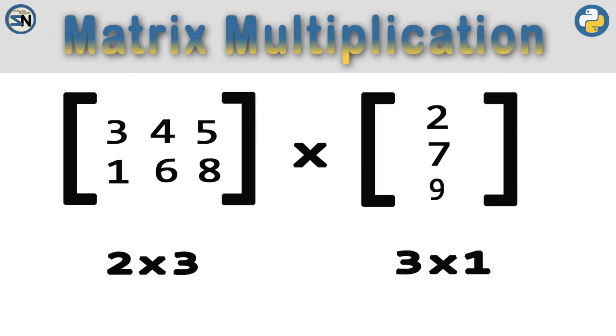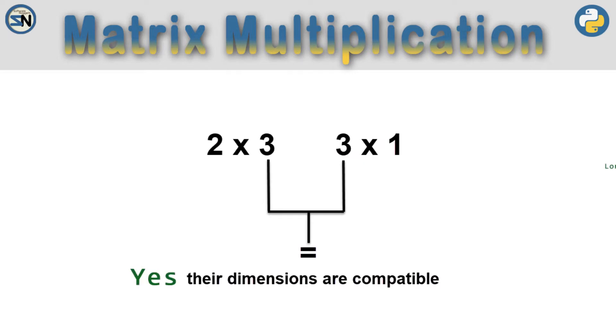Let us multiply these two matrices. To test to see if two matrices are compatible for multiplication, we need to make sure the number of columns in the first matrix is equal to the number of rows in the second.